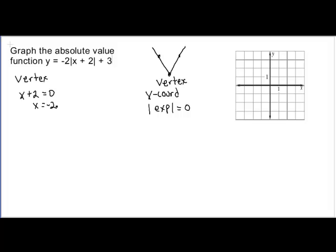Now, the vertex is a coordinate pair, a point, so we need to find the y value. As in any function, to find the y value, we can substitute in the x. So I'm going to put my negative 2 in for my x and calculate my equation. We have to do what's inside the absolute value first, so we get negative 2 times the absolute value of zero. The absolute value is zero, so I have negative 2 times zero plus 3, and negative 2 times zero is zero, zero plus 3 is 3. So my vertex is at negative 2 comma 3.